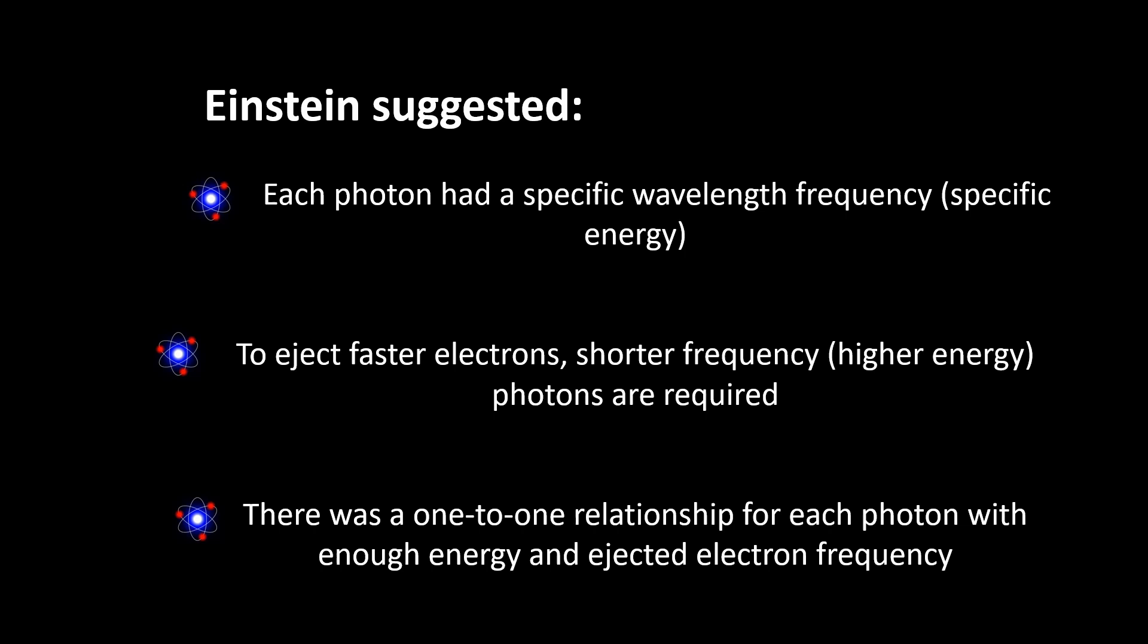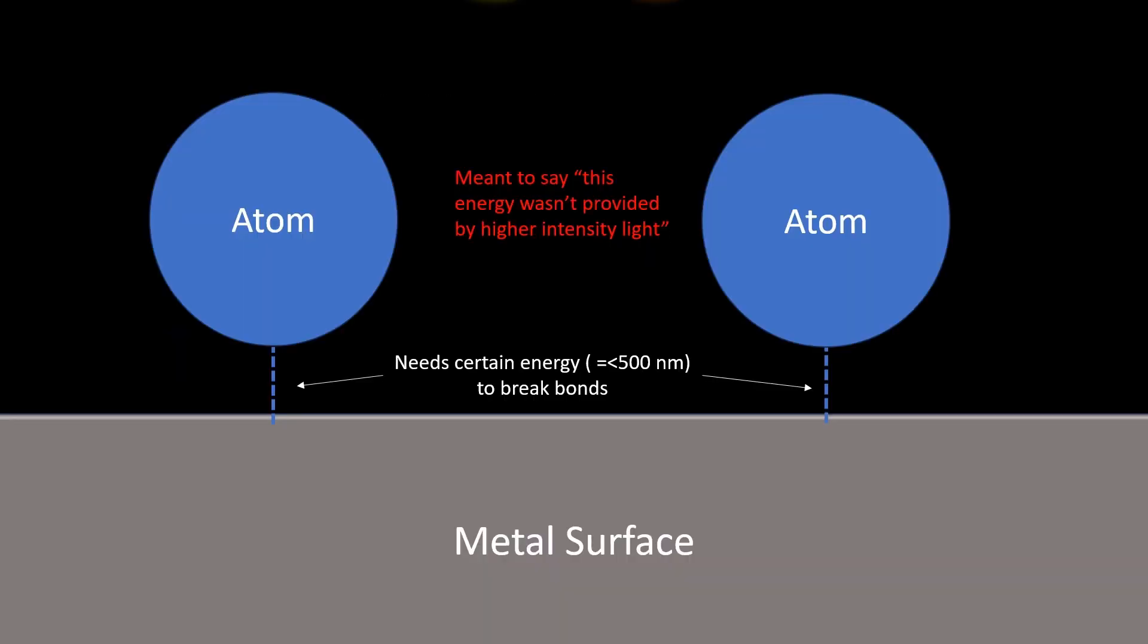So, when the intensity of light increased, it merely meant more photons were released, not faster ones. To eject faster ones, you needed higher energy photons. Not only this, but to eject an electron, a certain amount of energy was needed. And this was a one-to-one relationship. So, for each one photon with enough energy, one electron could be liberated.